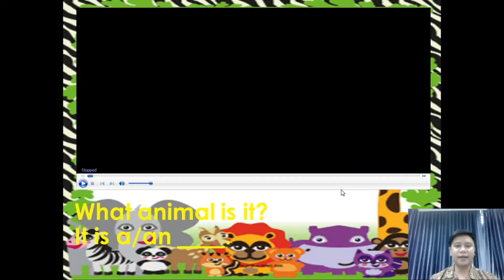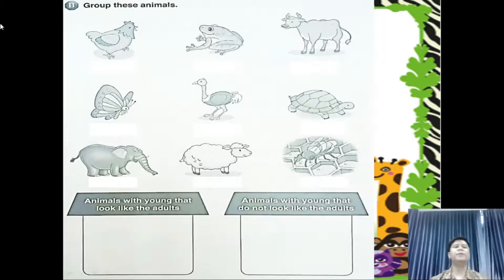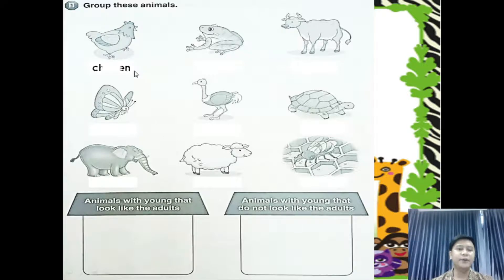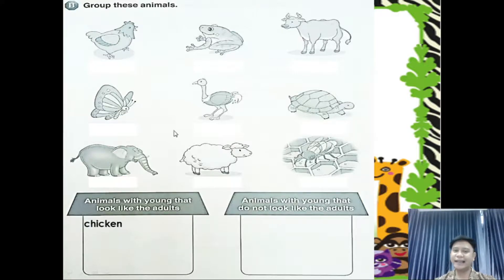We're going to have a quiz. Let's read: group these animals. On the left side are animals whose young ones look like the adults. On the right side are animals whose young ones do not look like the adults. Let's start with number one — chicken. Does it look like or not look like? Very good — look like. Number two — frog. Does it look like or not look like? Very good — does not look like.